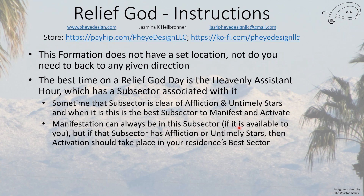Manifestation can always occur in the heavenly assistant hour subsector. But if it does have problems, then you want to activate in your residence's best sector. I have a video that can help you find it — I think it's entitled 'Finding Your House's Best Sector' and it'll have 'finding best sector' in the title.